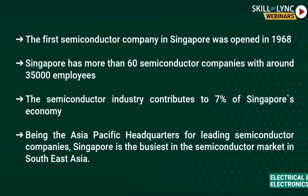The first semiconductor industry in Singapore was opened in 1968. As of now, Singapore has more than 60 semiconductor companies with around 35,000 employees. This is a very big industry in Singapore, contributing to 7% of the country's economy. Being the Asia Pacific headquarters for leading semiconductor companies, Singapore is the busiest in the semiconductor market in Southeast Asia. India also has major semiconductor giants putting up very big design houses, making Southeast Asia packed with semiconductor companies.